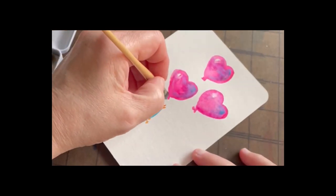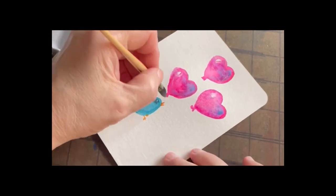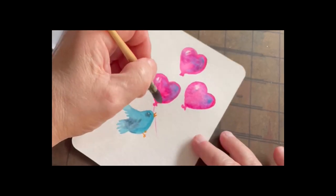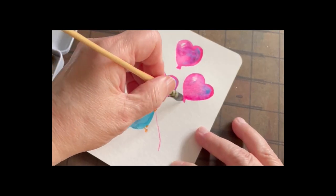Now I'll blot my brush so it's not too watery and pick up just a little bit of the Opus to draw these strings and pull them down. I don't want them to be real distinct.